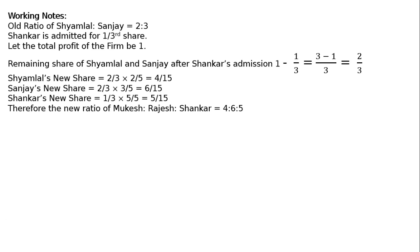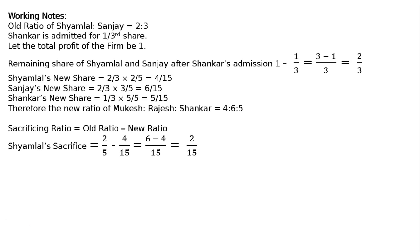Therefore, the new ratio of Samlal to Sanjay to Sankar is 4:6:5. For treatment of goodwill, we find the sacrificing ratio, which equals old ratio minus new ratio. Samlal's sacrifice is 2/5 − 4/15. Taking LCM as 15: (6−4)/15 = 2/15.